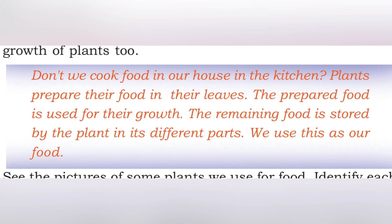The prepared food is used for the plant's growth. The remaining food is stored by the plant in its different parts. We use this stored food as our food. For example, the papaya plant stores food in its fruit, and that fruit becomes our food.